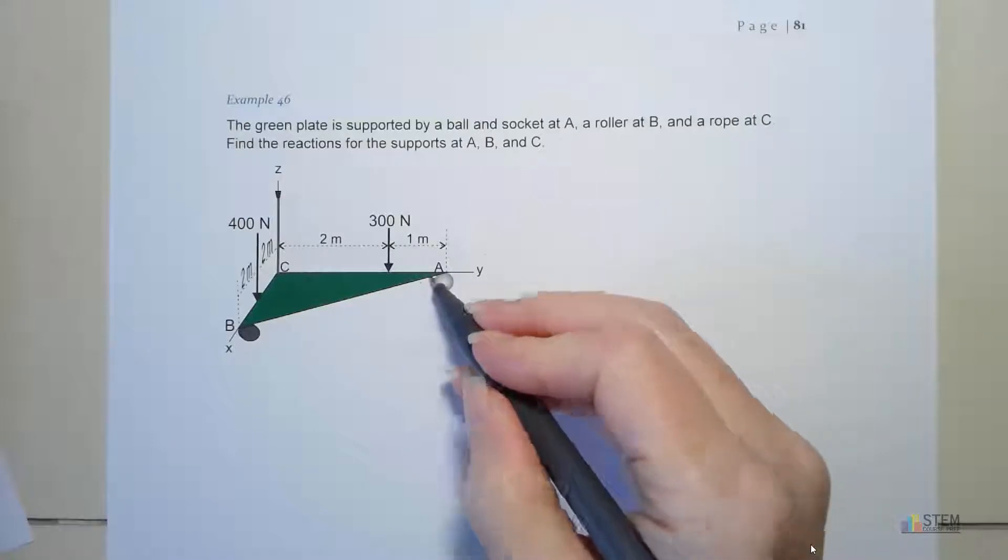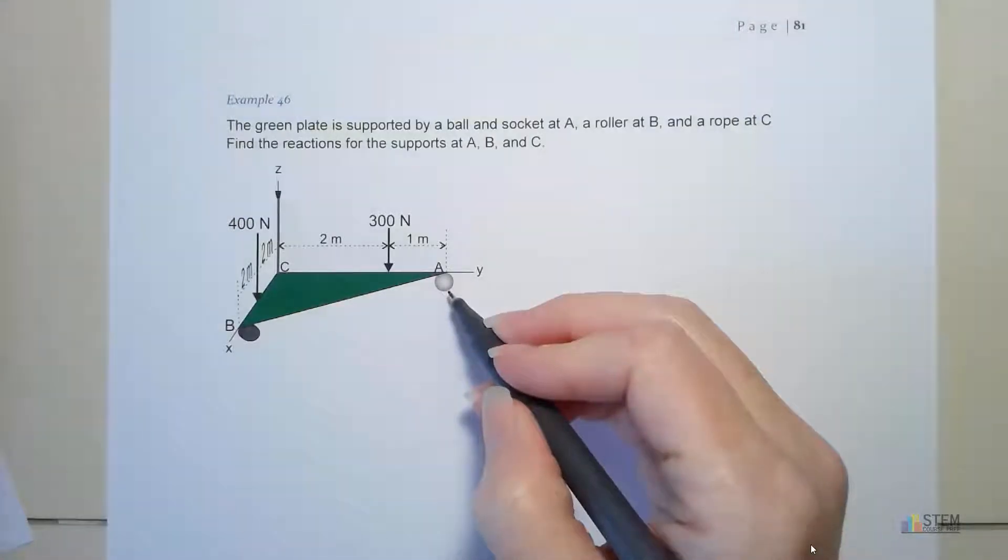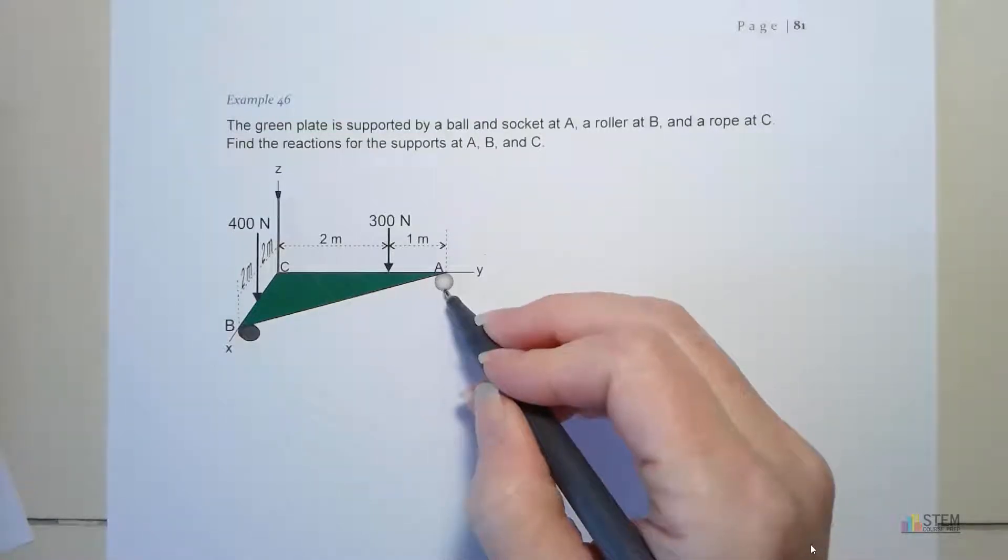Now I know my ball and socket here at A doesn't really look like a ball and socket, but those are kind of hard to draw in Corel Designer. Just take my word for it, this is going to be a ball and socket.